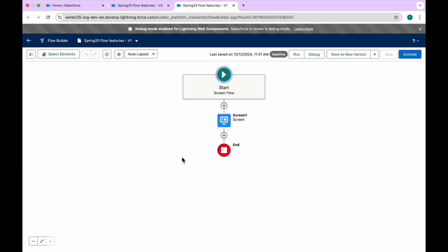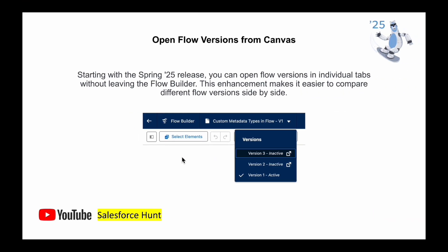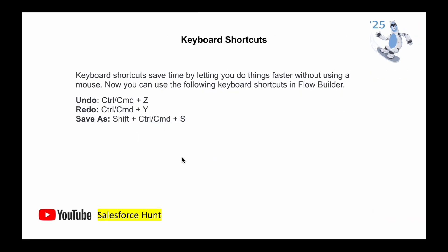You can leverage this first feature in Spring 25. The next feature is keyboard shortcuts. Keyboard shortcuts save time by letting you do things faster without using the mouse. Now you can use shortcuts in the Flow window — for example, Undo is Control+Z on Windows or Command+Z on Mac. Similarly, Redo, Save, and other commands are available.